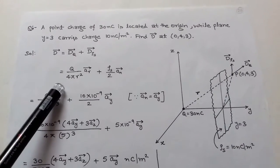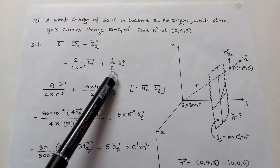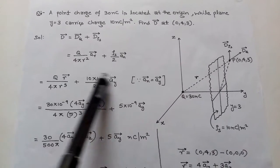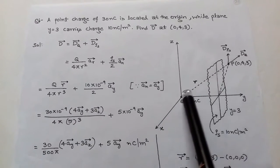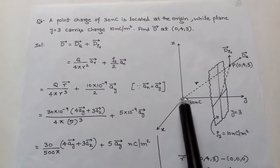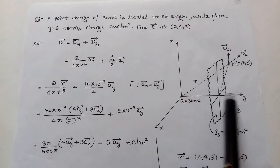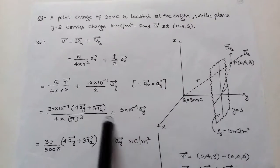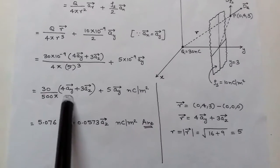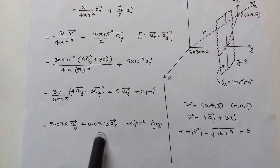The formula is D = Dq + Dρs. For the point charge: D = Q upon 4πR² in vector R. For surface charge density: D = ρs upon 2 in the normal direction. The distance between the observation point (0,4,3) and Q at origin is 4ay + 3az. The normal direction of the plane y = 3 is along the y-direction, so the normal unit vector is ay. After calculating, we get electric flux density D = 5.076ay + 0.0573ay + 0.0573az.